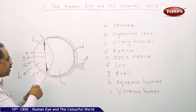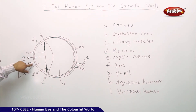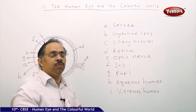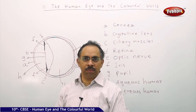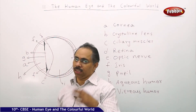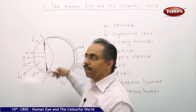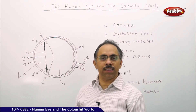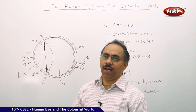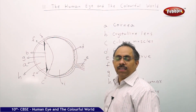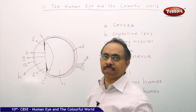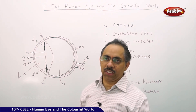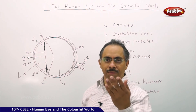This is the basic structure. The front portion A is the cornea — it is responsible for 90% of the refraction. This crystalline lens gives fine-tuning to the refraction, and the image is formed on the screen. As discussed, the image is inverted, but the optic nerve helps in converting that inverted image into an erect one, effectively making it appear straight.